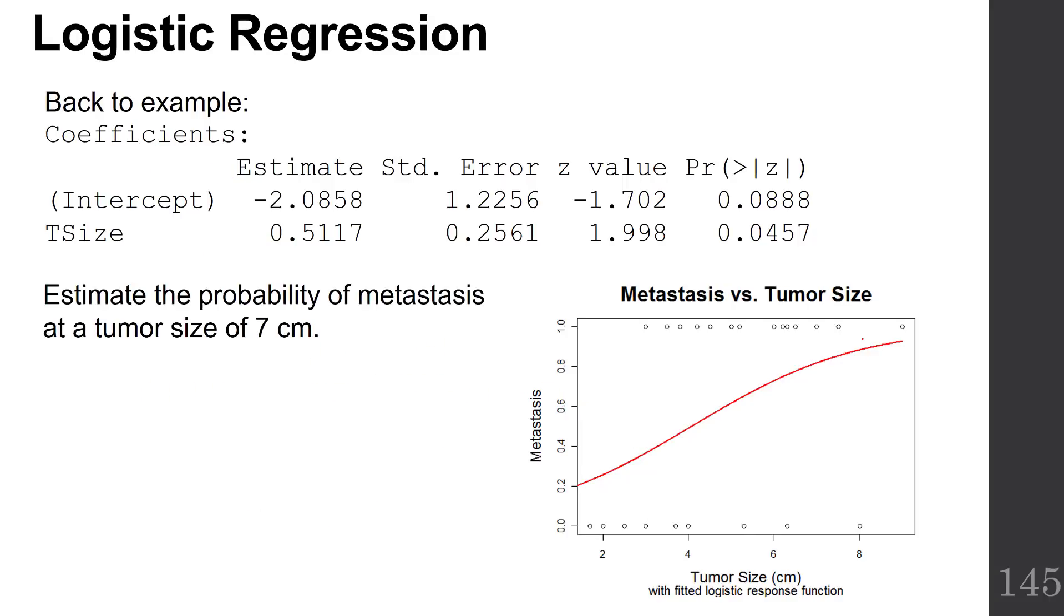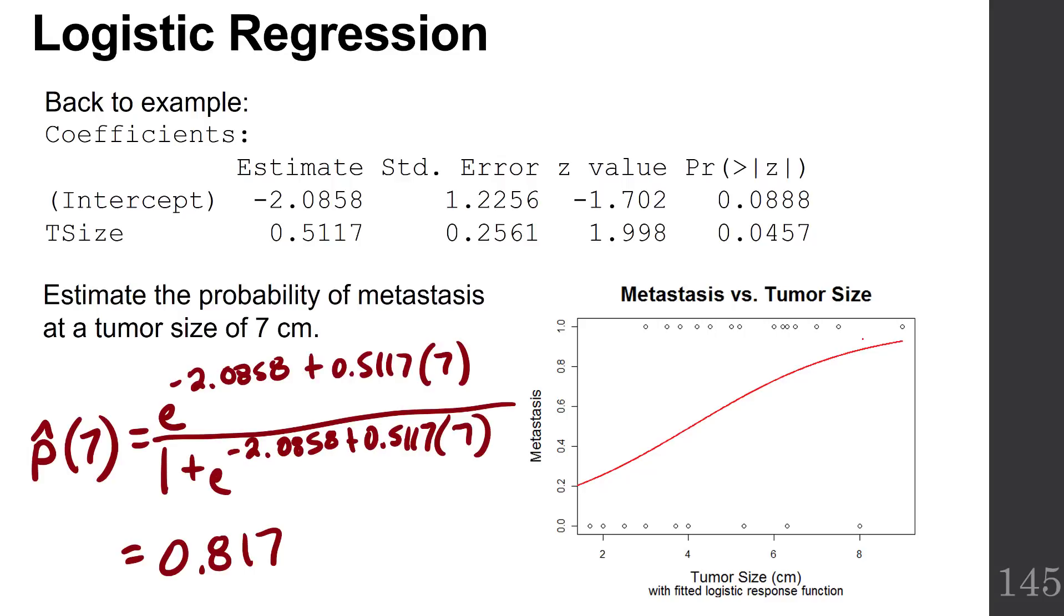Let's use this output to estimate the probability of metastasis at a tumor size of 7 centimeters. The probability of tumor metastasis at 7 centimeters is to just go ahead and put in our B naught, which is negative 2.0858, everywhere in the B naught in the formula. And our 0.5117 in for our B1.